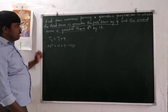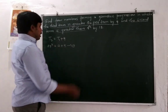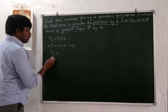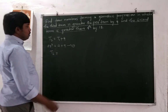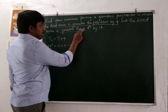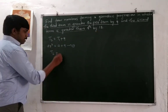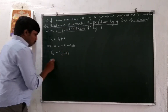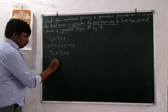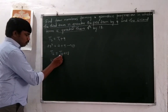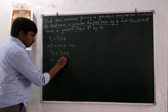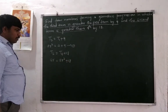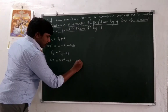Second equation: the second term T2 is greater than the fourth term by 18, so T2 = T4 + 18. What is T2? T2 = a·r. What is T4? T4 = a·r³. So a·r = a·r³ + 18. This is equation 2.